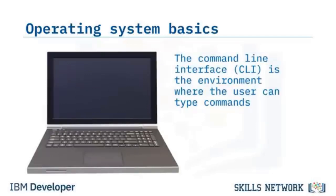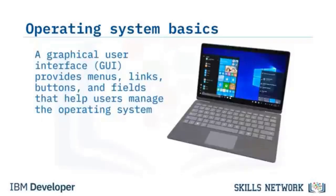The first environment is the command line interface, or CLI, where the user can type commands. The second environment is known as a graphical user interface, or graphic shell. These environments provide menus, links, buttons, and fields that help users manage the operating system.